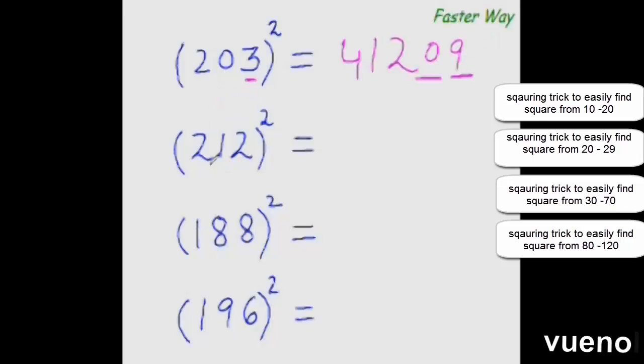So now find the square of 212 using the same approach. So once again add this 12, that is distance from the base 200, to this entire number. 12 plus 212 would be 224. And double of 224 would be 448 using the doubling technique. Now two more places to go. So just put the square of 12 here. 12 square is 144. So the answer would be 44944.